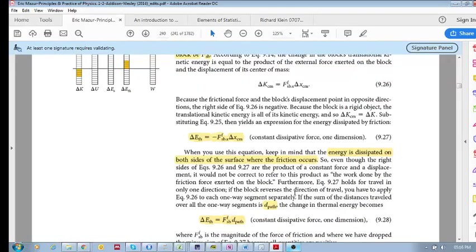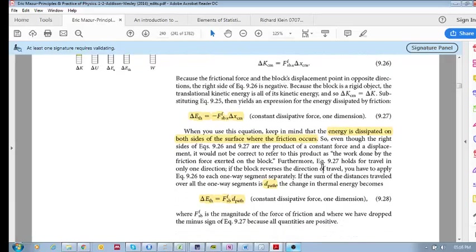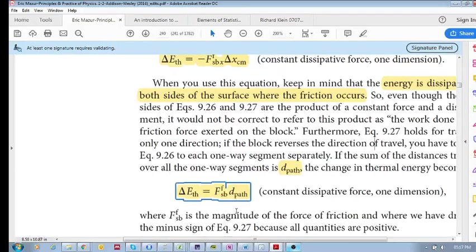Another thing is, that because this dissipation of energy, this increase of the thermal energy, is dependent on every single segment that it travels. So, if you go in one direction, and then you reverse and go in the other direction, the total thermal energy increase is a function of the entire path. That's why this eventually looks like this.